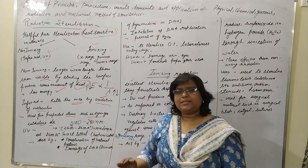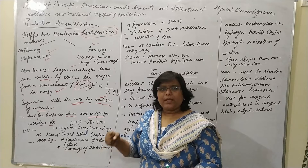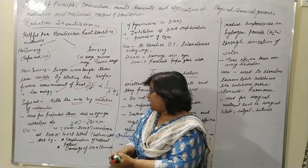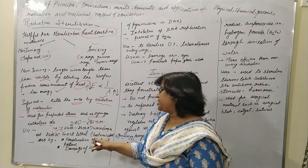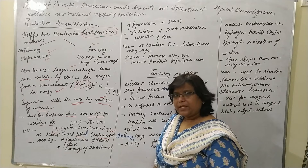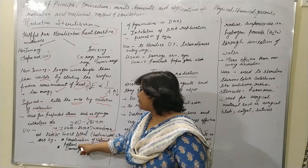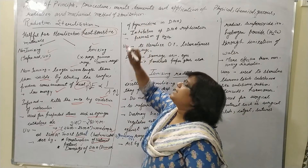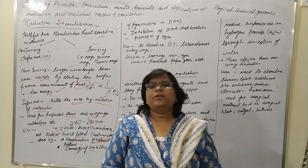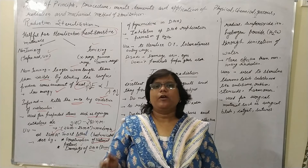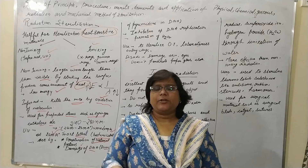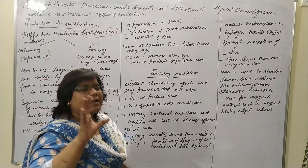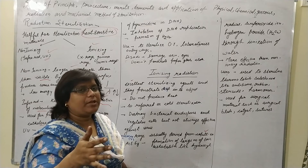Ultraviolet radiation has the range 2400 to 2800 angstrom, but at 2600 angstrom the ultraviolet rays have the most lethal action — that 2600 angstrom radiation is the most lethal and has bactericidal action. It acts by denaturation of bacterial protein and damages DNA by forming pyrimidine dimers. In DNA there are two types of nitrogen bases: purines — adenine and guanine — and pyrimidines — cytosine, thymine, and uracil. The UV radiation forms pyrimidine dimers, which degenerate or alter the DNA formation.